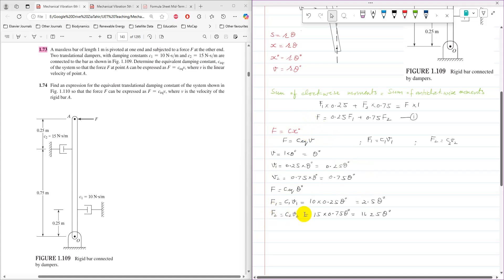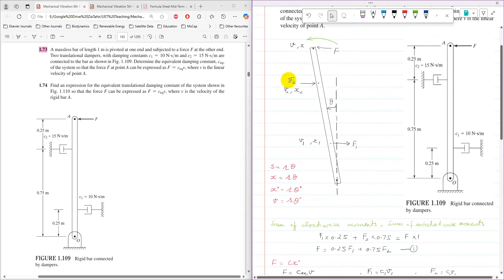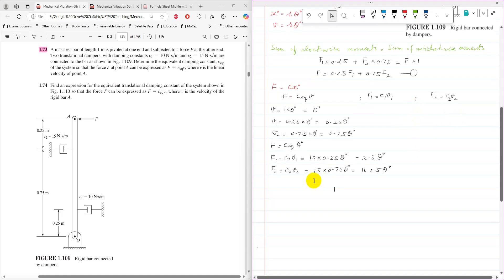F2 equals C2 times V2. C2 is 15 and V2 is 0.75 theta dot, so it becomes 11.25 theta dot. Now I have all these forces in terms of the common variable theta dot, so I can substitute them into equation 1.